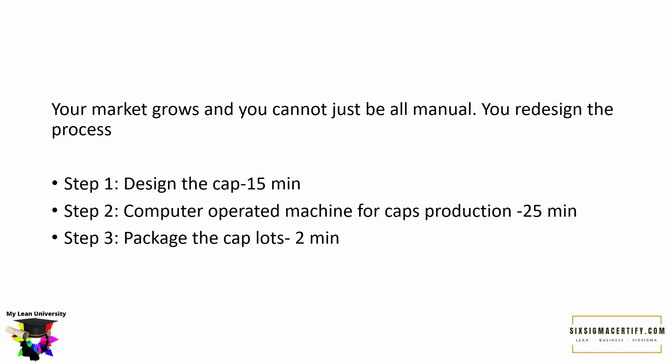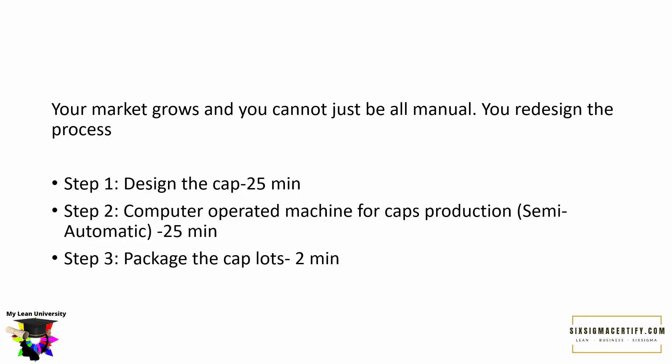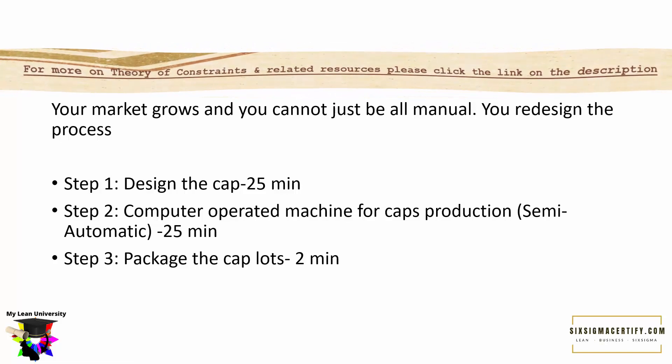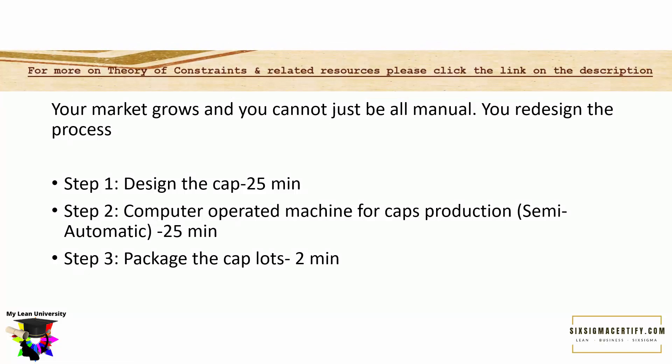By continuously applying the Theory of Constraints, we identified that the main constraint was time itself, caused by manual operations. We moved to automation, changing the manufacturing process and reducing the constraint. But suppose in the new scenario, designing the cap takes 25 minutes and the computer-operated machine also takes 25 minutes. In this case, time alone is no longer the distinguishing bottleneck, so we look for the next one — for example, whichever step is least under our control, such as the design process, would become the new bottleneck.